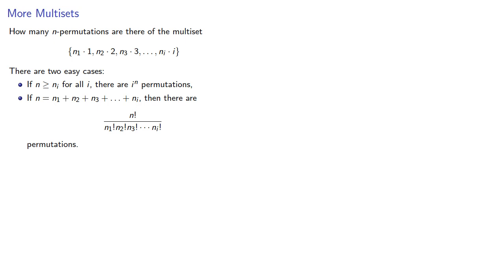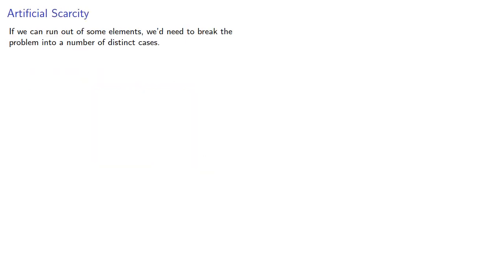But if n is less than ni for sum of the i, then we might run out of sum of the elements. Now, if we run out of sum of the elements, we'd need to break the problem into a number of distinct cases.